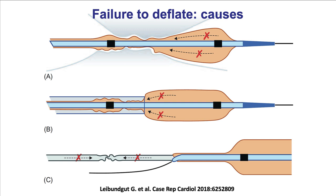There are several causes of failure to deflate. One is that the treated lesion is very tight and essentially strangulates the balloon, not allowing contrast to come back from the more distal portion. Another cause is premature withdrawal of the balloon into the guide catheter, which can strangulate the proximal portion and prevent deflation of the distal portion. Finally, damage or kinking of the balloon shaft can damage the hypotube that allows the saline and contrast mixture to return from the balloon.